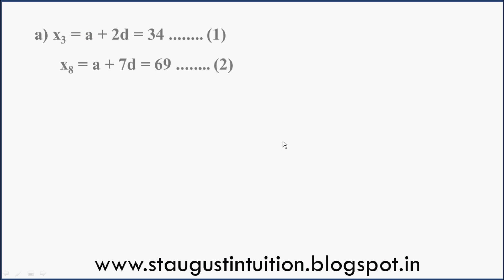Similarly, X8 equals first term plus (8 minus 1) into d, that is a plus 7d, which is equal to 69. Now there are two methods to solve this.